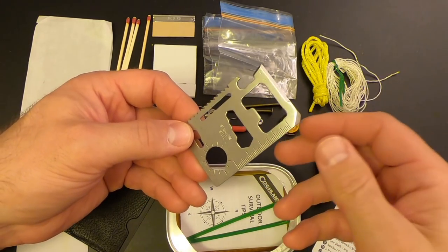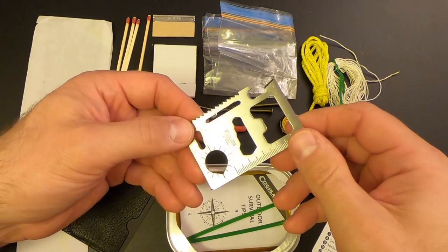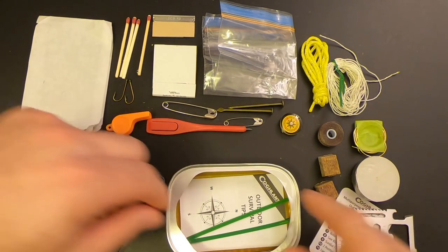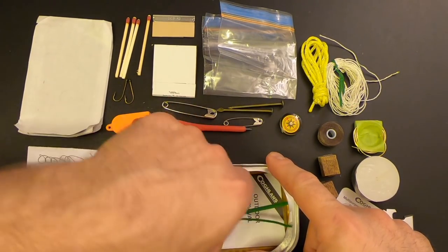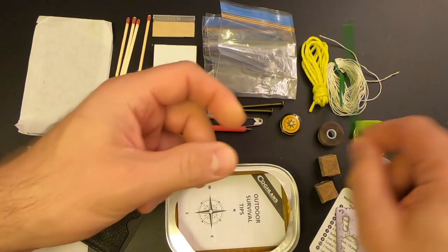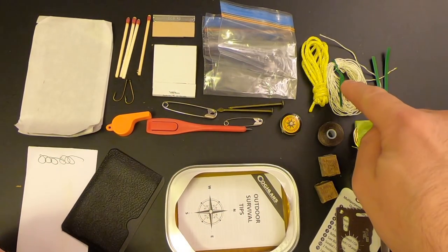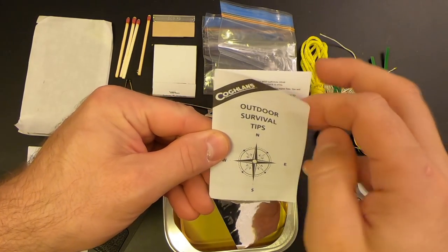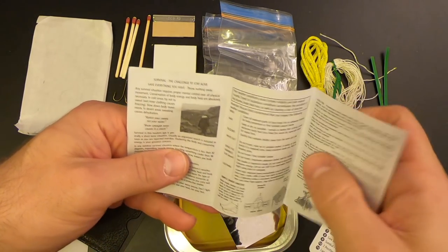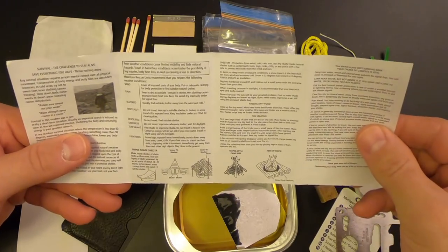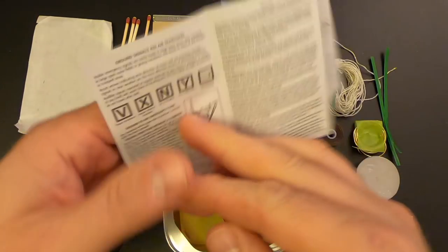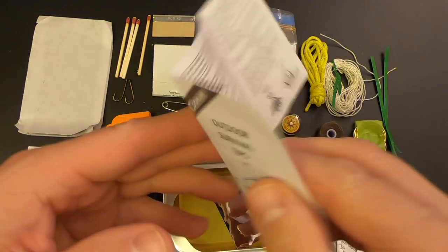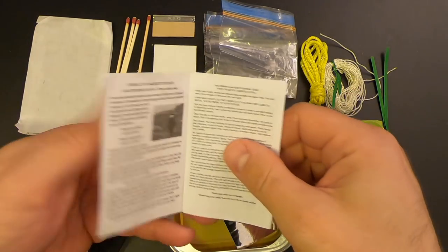Then we've got two more twisty ties to go with the one that was around the cordage. Then we've got the outdoor survival tips guide. It's got the same basic information that you see on a lot of these guides that you find in survival kits.